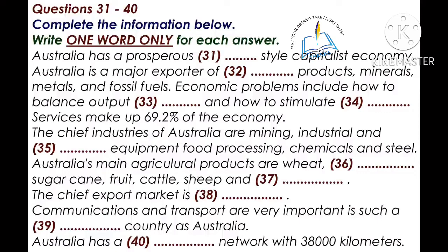Australia has an estimated 8.7 million telephones and 9.2 million televisions. There are some 134 television broadcast stations and 325 radio stations.